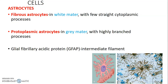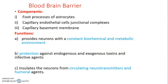Astrocytes help to form the blood-brain barrier. The three major components of the blood-brain barrier are: foot processes of astrocytes, capillary endothelial cells held together by junctional complexes, and the capillary basement membrane on which those endothelial cells lie. Functions include providing neurons with a constant biochemical and metabolic environment, protecting against endogenous and exogenous toxins, microbes and infections, and insulating neurons from circulating neurotransmitters and hormones.